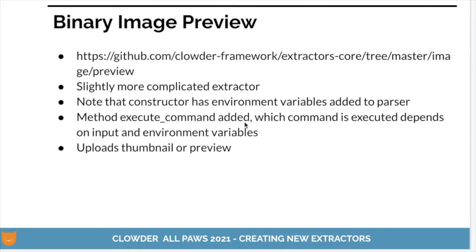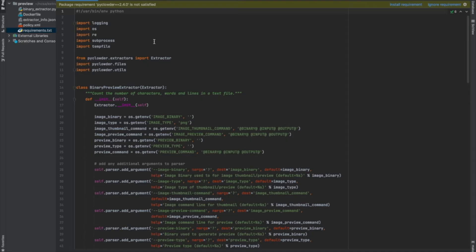For our next example, we're going to look at the binary image preview extractor. It's a slightly more complicated extractor, and looking at this will help understand how we end up using environment variables that we would like to add. This extractor uploads a thumbnail or an image preview. I'm going to be moving back and forth between the different files to explain what goes into all of them.